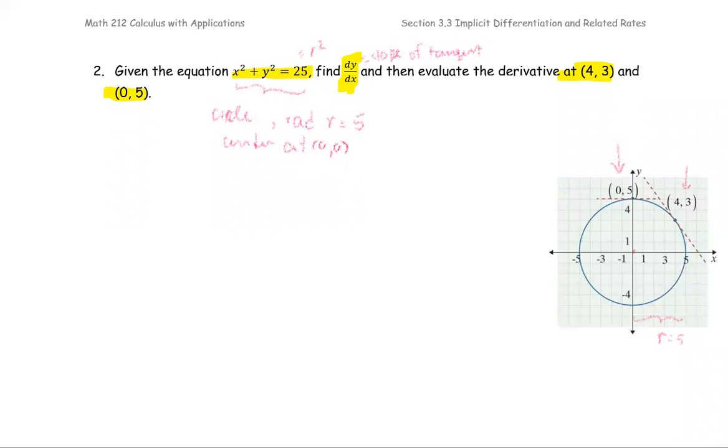From the diagram with the dotted tangent line, you can tell that at (4, 3) the slope of the tangent line is supposed to be negative. Based on the picture, we can see the behavior of the tangent line where the tangent line passing through or tangent to the circle at the point (0, 5) is a horizontal line, so we expect to get the slope 0. So m equals 0 here and m negative for the other slope.